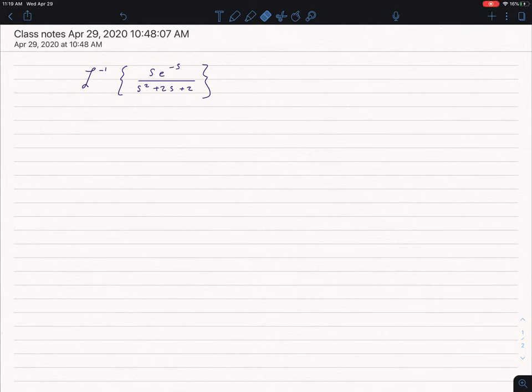Let's find the inverse Laplace of this, s e to the negative s over s squared plus 2s plus 2. Now what makes this interesting is that it has both a shift in terms of time and a shift in terms of s.